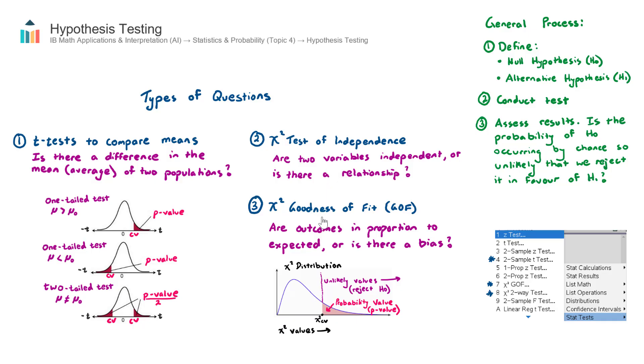The third type of question is called a chi-squared goodness of fit. Now, this is about, are the outcomes that we see by conducting a test, say, let's take a survey, is that in proportion to what we expect, or is there a bias?